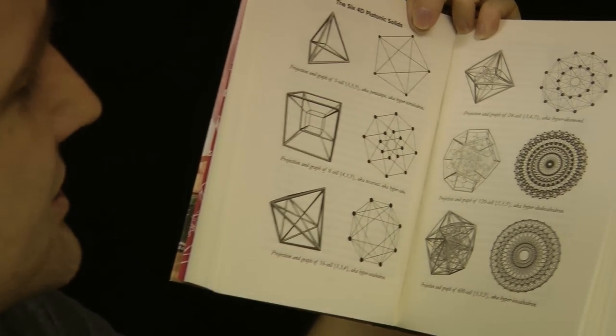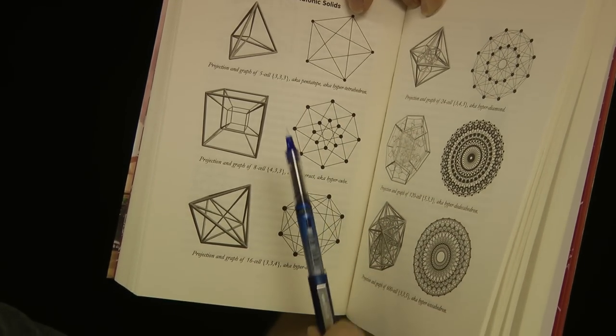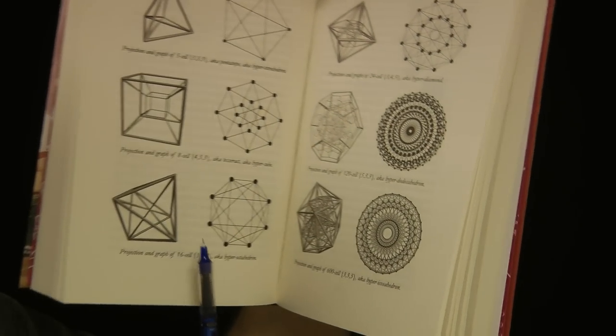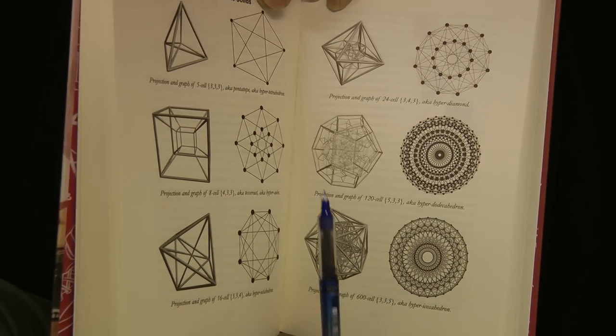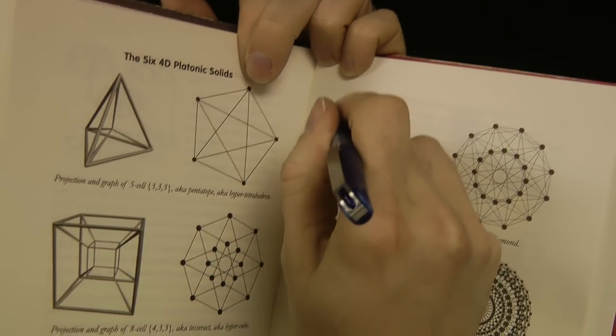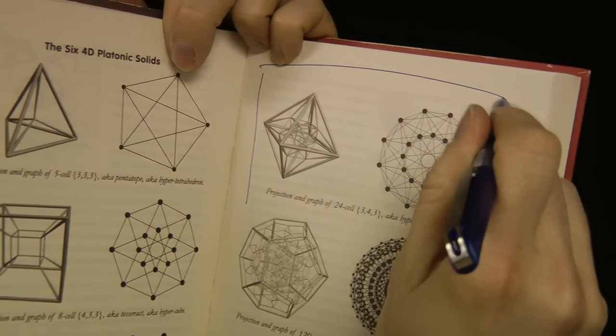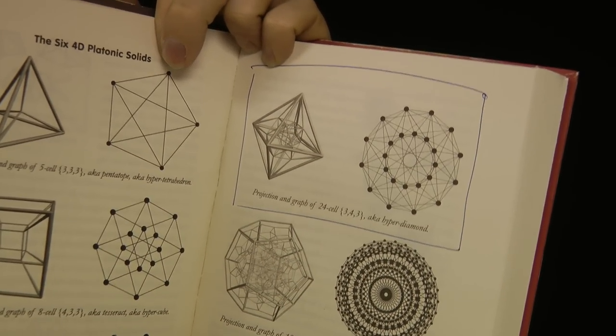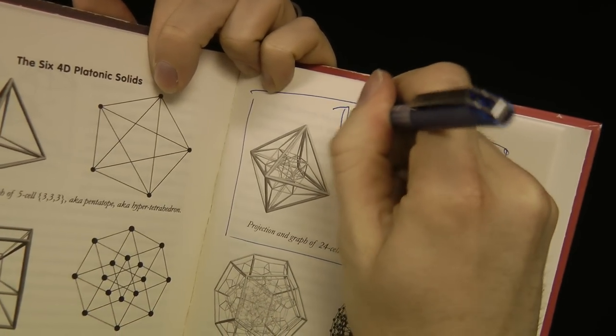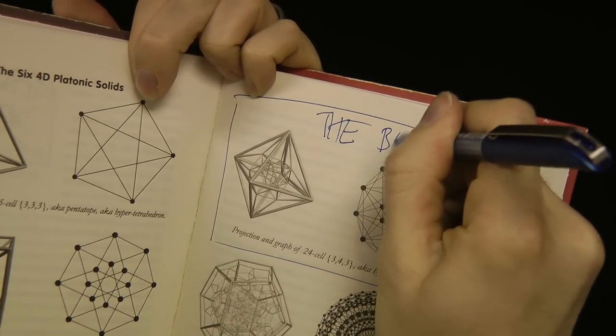I may have become so obsessed with the fourth dimension, I wrote a book all about it. And you can see here in chapter 10, I have all the 4D platonic solids. We have the hyper tetrahedron, the hyper cube, the hyper octahedron, the hyper icosahedron, and the hyper dodecahedron. And then there it is, the absolute best one. In fact, I'll highlight it right now. That is the hyper diamond. It is the best.